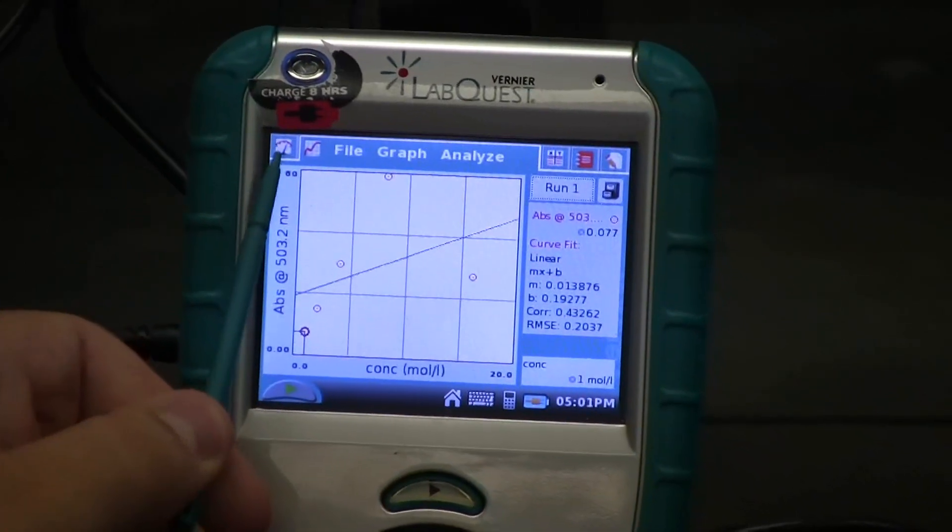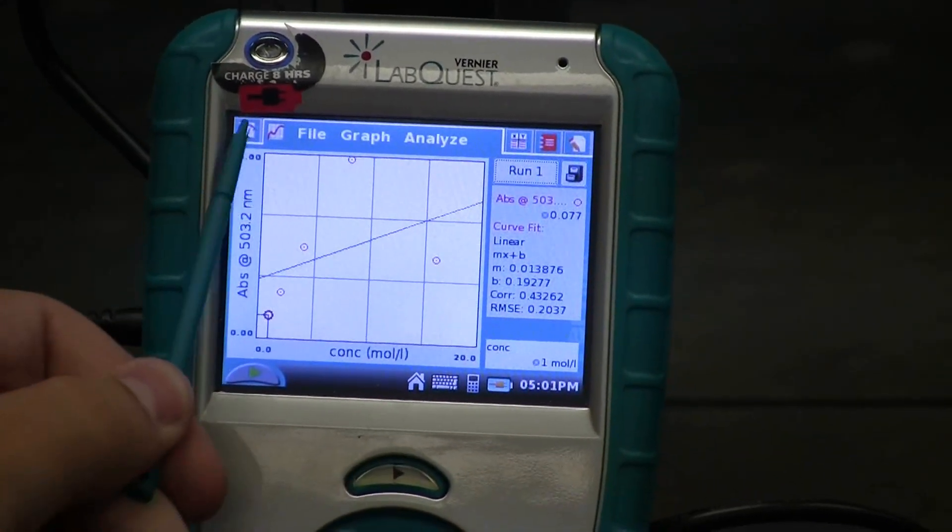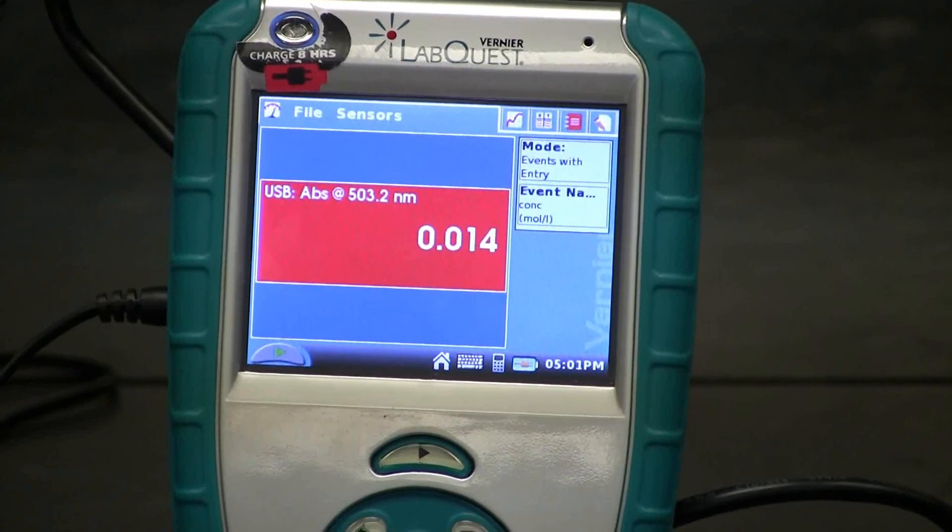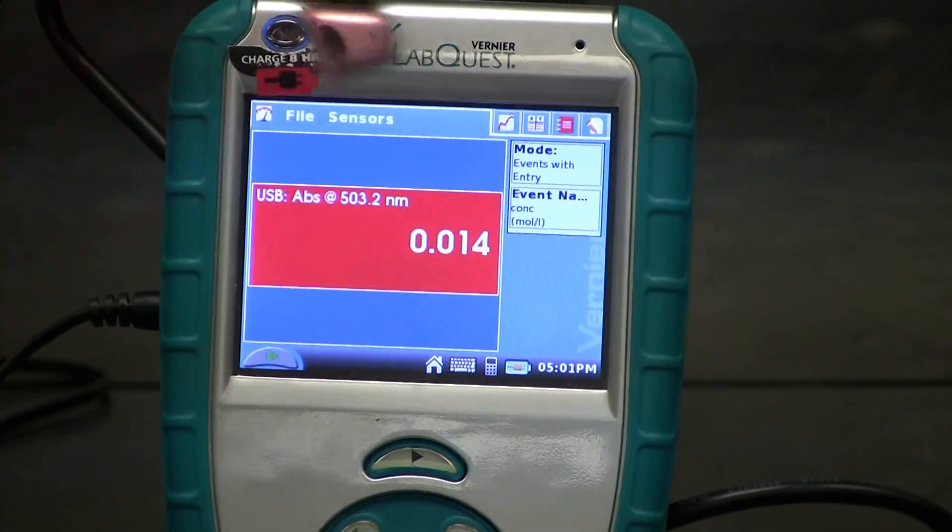Start by clicking on the Meter tab in the top left corner. You are now ready to test your unknown solution.